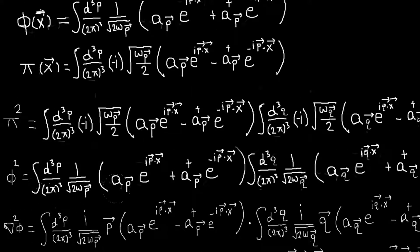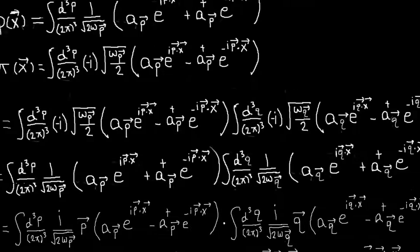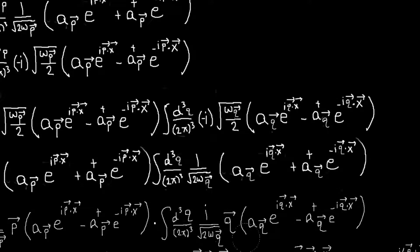So gradient of phi here, the only term that depends on x is the e to the ix terms. So like in this term we'll get an ip, this term we'll get a minus ip. I can factor that out, so this term will end up with a minus sign. And then again, same thing for this term, just with q instead of p.